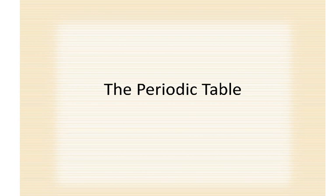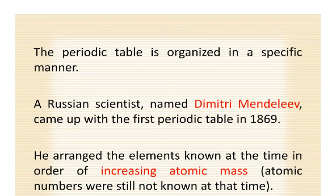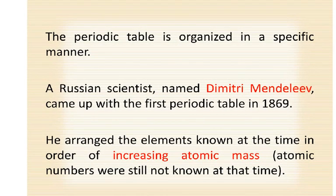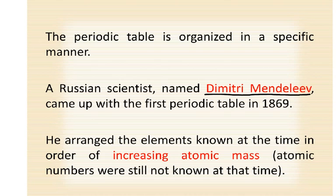The periodic table is organized in a specific manner. A Russian scientist by the name of Dmitry Mendeleev — so this will be your first blank line — came up with the first periodic table in 1869. When you think about it, they didn't have that many elements back in 1869, maybe in the 30s or 40s. They had very few elements, and yet he managed to come up with a periodic table of sorts.